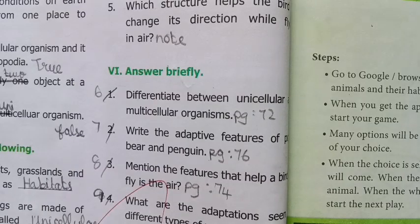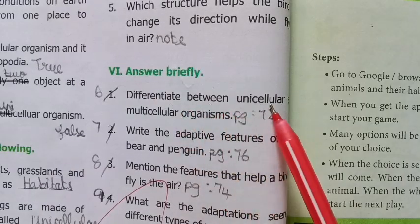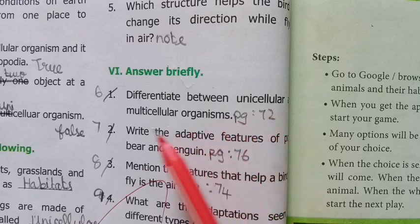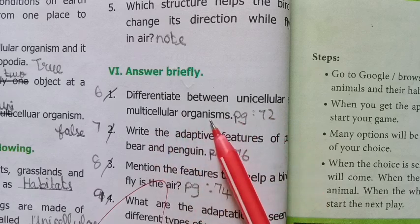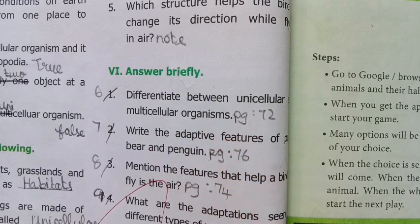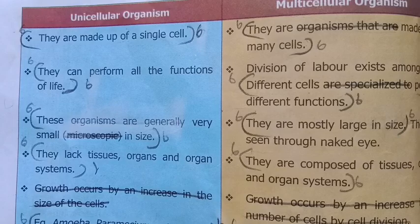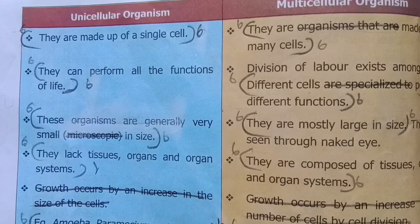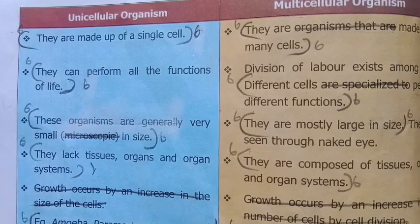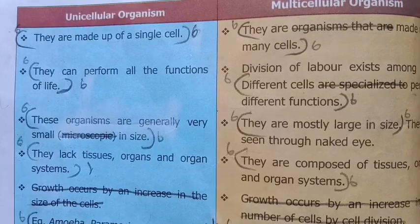Answer briefly. First question: differentiate between unicellular and multicellular organisms. Refer to page number 72 — draw a table showing the differences between unicellular and multicellular organisms.